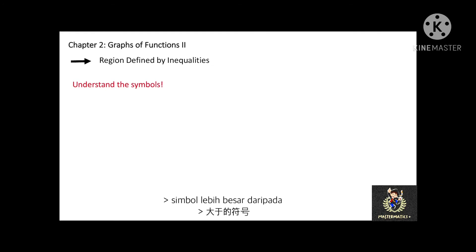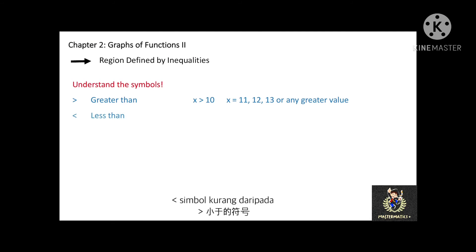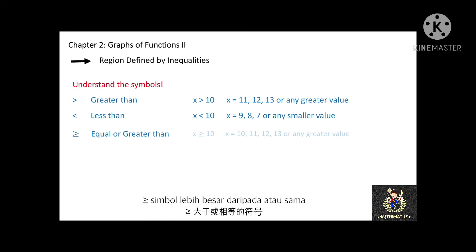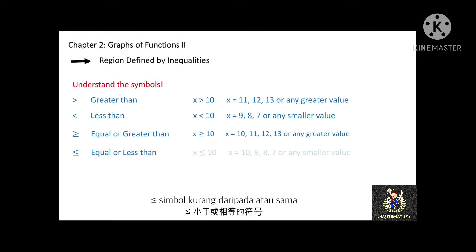The last subtopic of this chapter is region defined by inequalities. First, we need to understand the inequality symbols: greater than and less than. For example, x > 10 means the range of x will be 11, 12, 13, or any greater value. On the other hand, if x < 10, the range of x will be 9, 8, 7, or any smaller value. There are also the symbols 'equal to or greater than' and 'equal to or less than.' For example, x ≥ 10 includes 10 and any greater value such as 11, 12, and 13. If x ≤ 10, the range includes 10 and any smaller values.